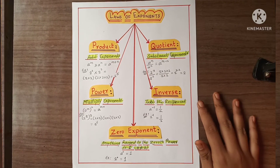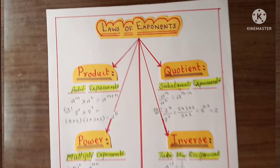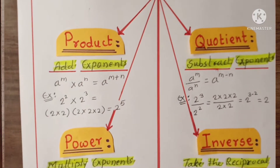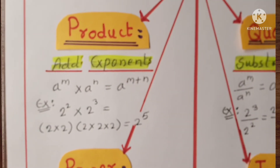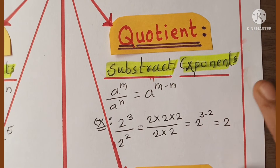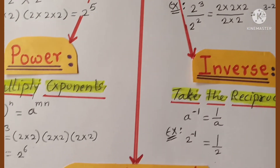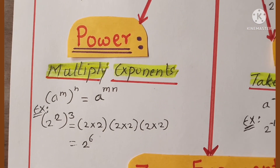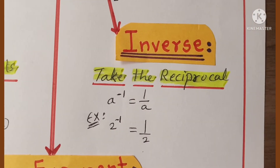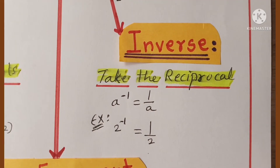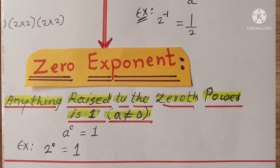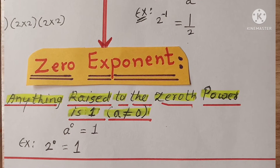The next and last topic is laws of exponents. First is product, which means we have to add exponents. Second is quotient, which means we have to subtract exponents. Third is power, which means we have to multiply exponents. Fourth is inverse, which means we have to take the reciprocal. And zero exponent — anything raised to the zeroth power is one, which means 'a' is not equal to zero.